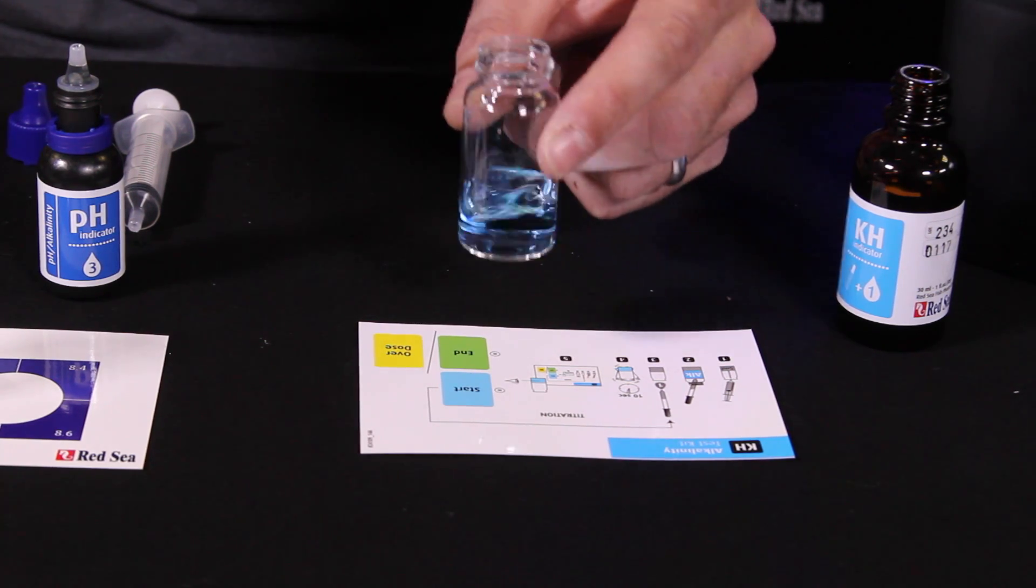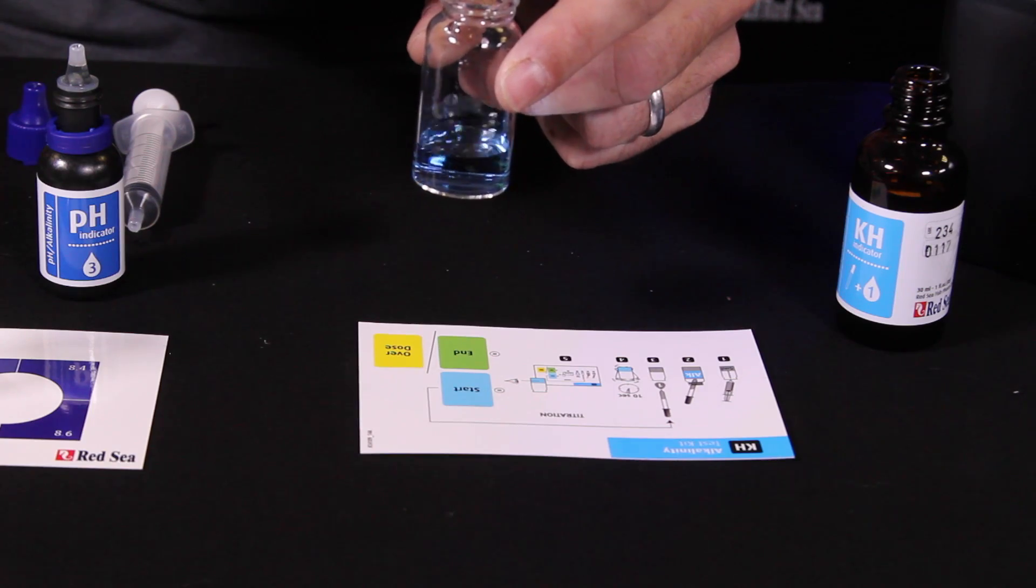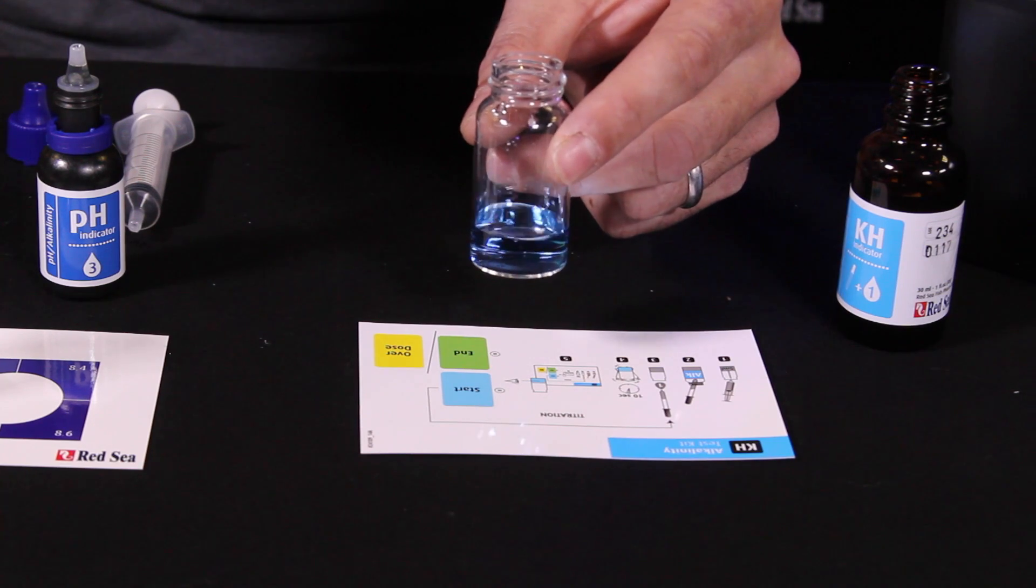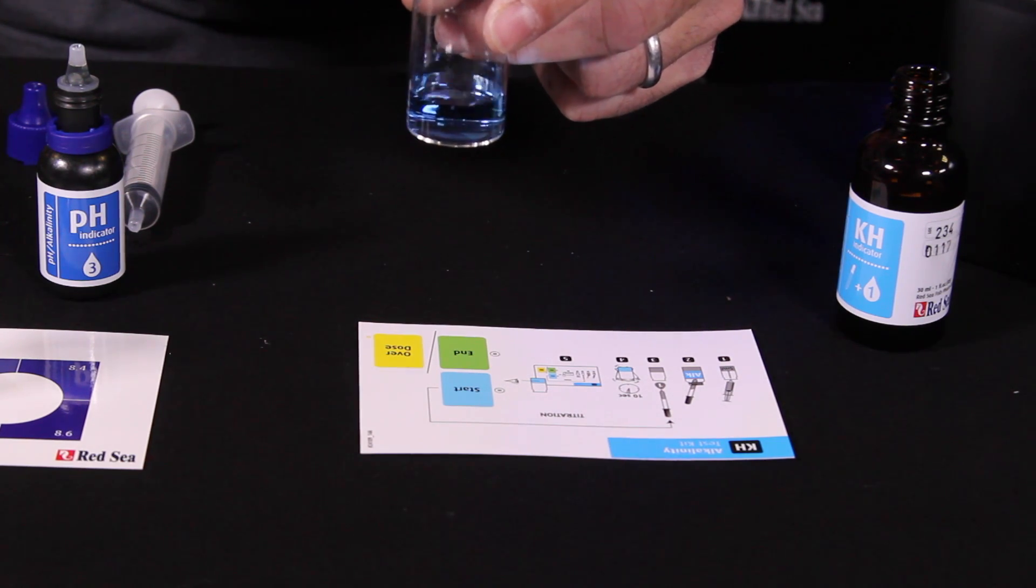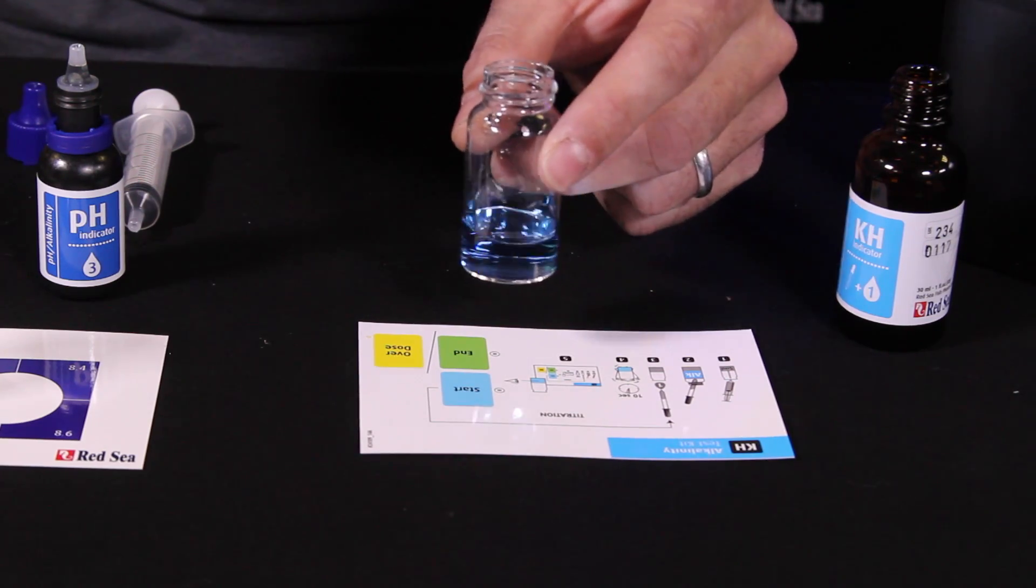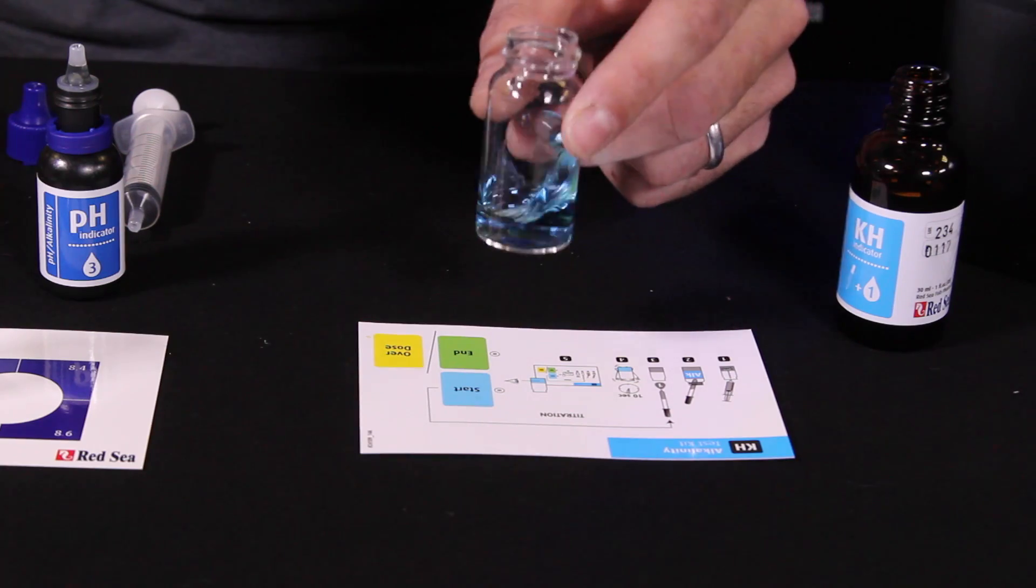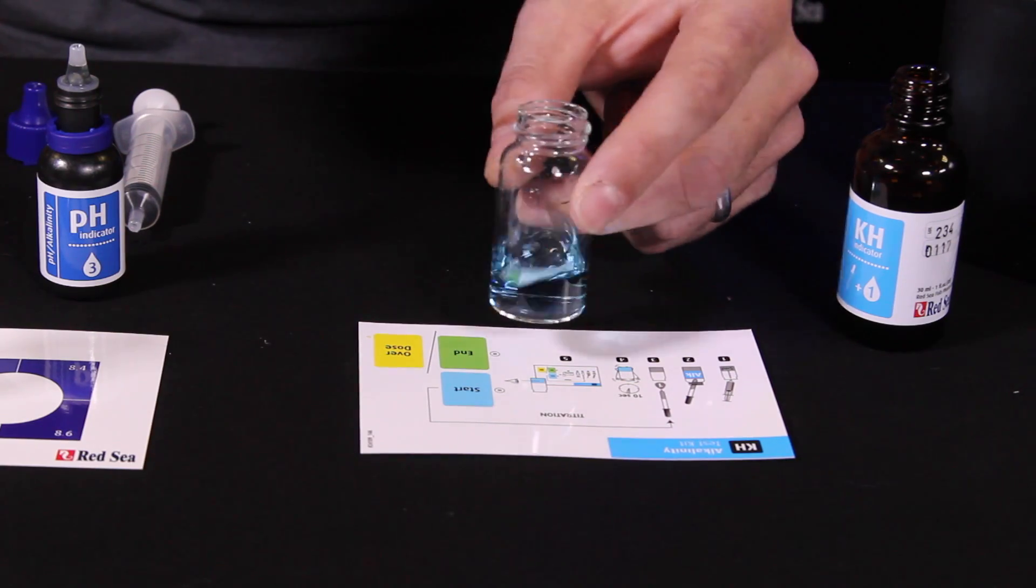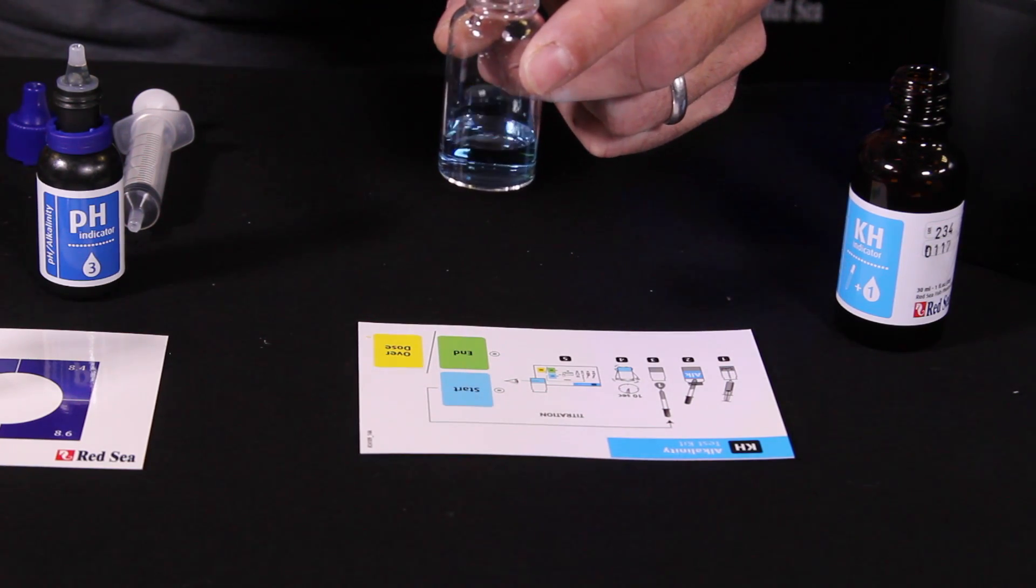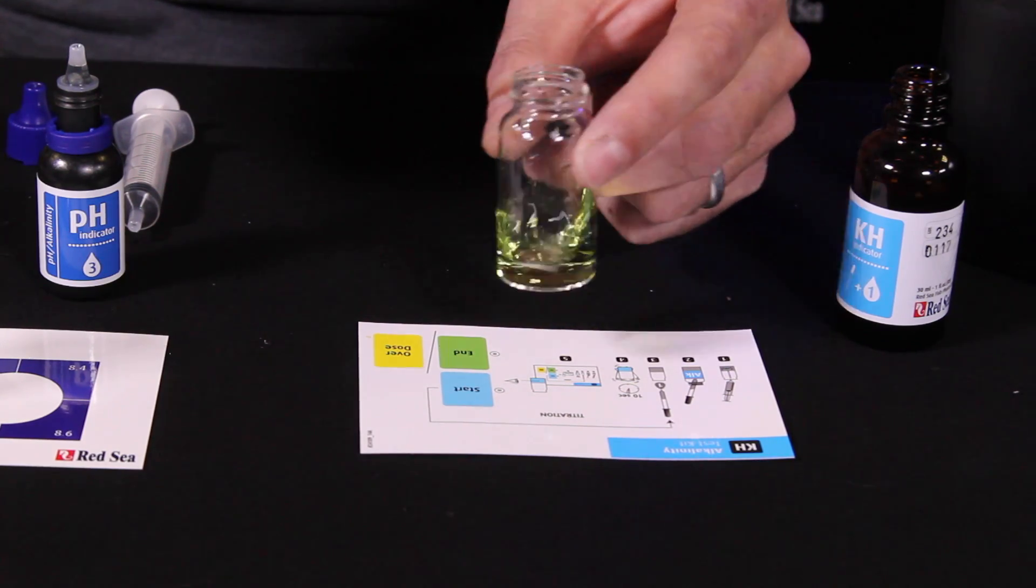Sixth drop. No change yet. Number seven. Still looks blue. Number eight. Still blue. Come on. Number nine. Looks like I'm starting to see it want to go green, but just not yet. Go for number ten. There we have green on the tenth drop.